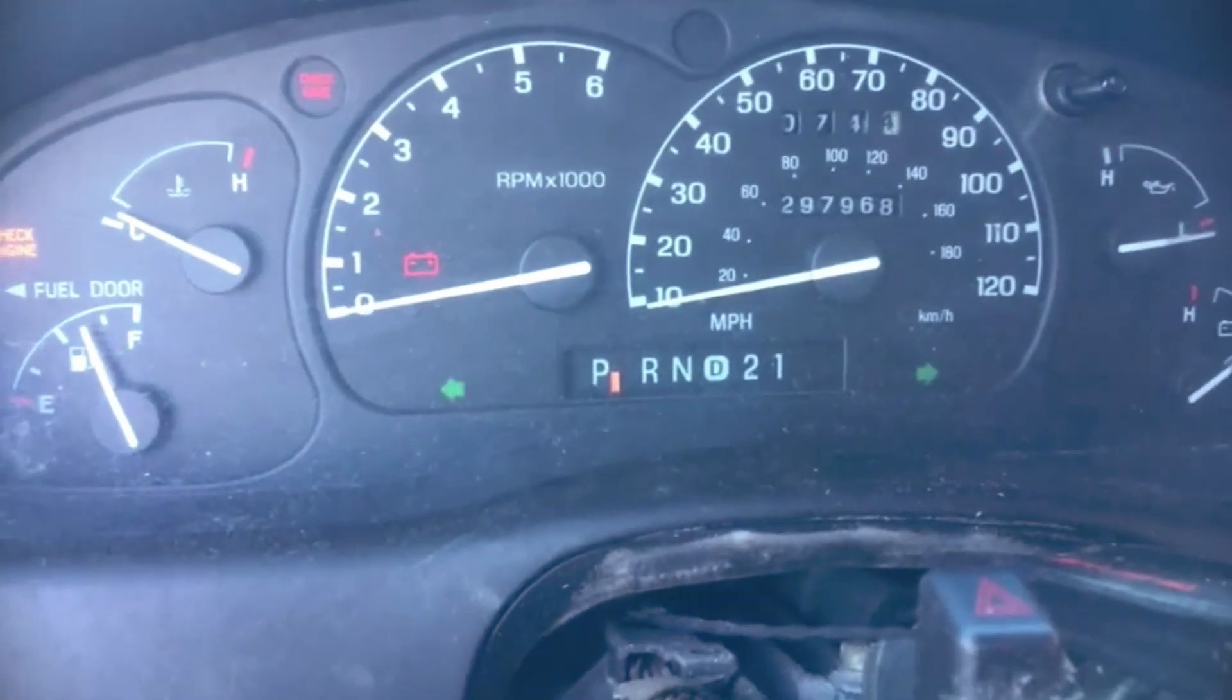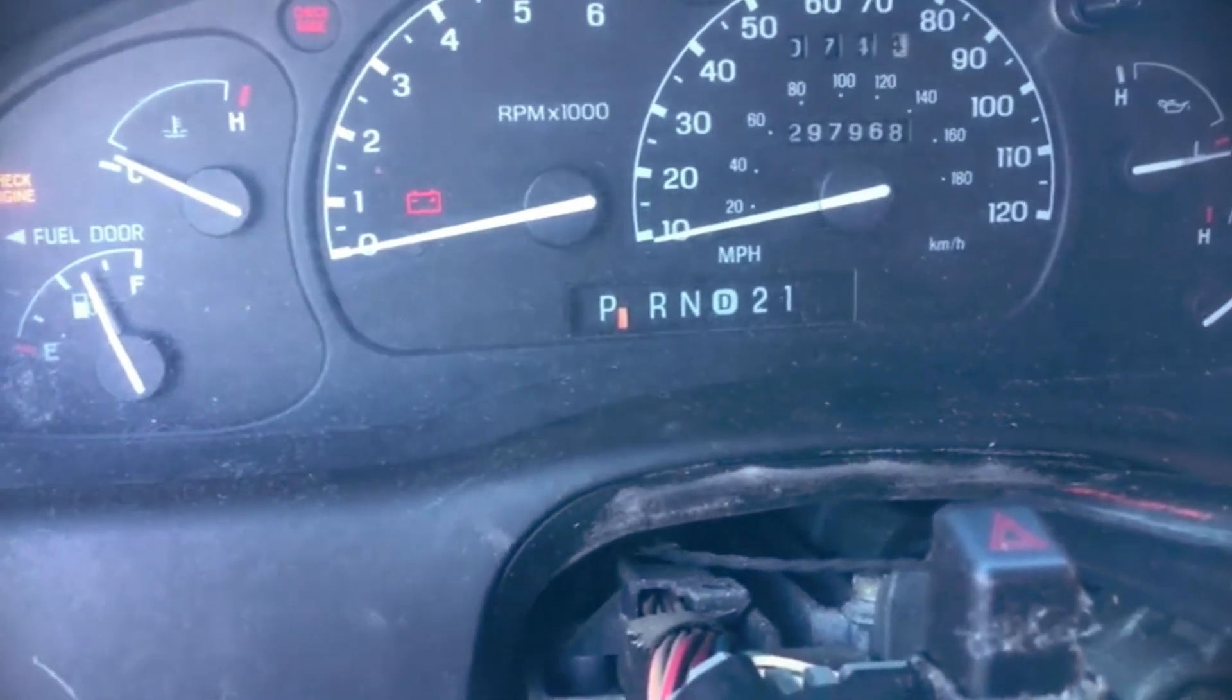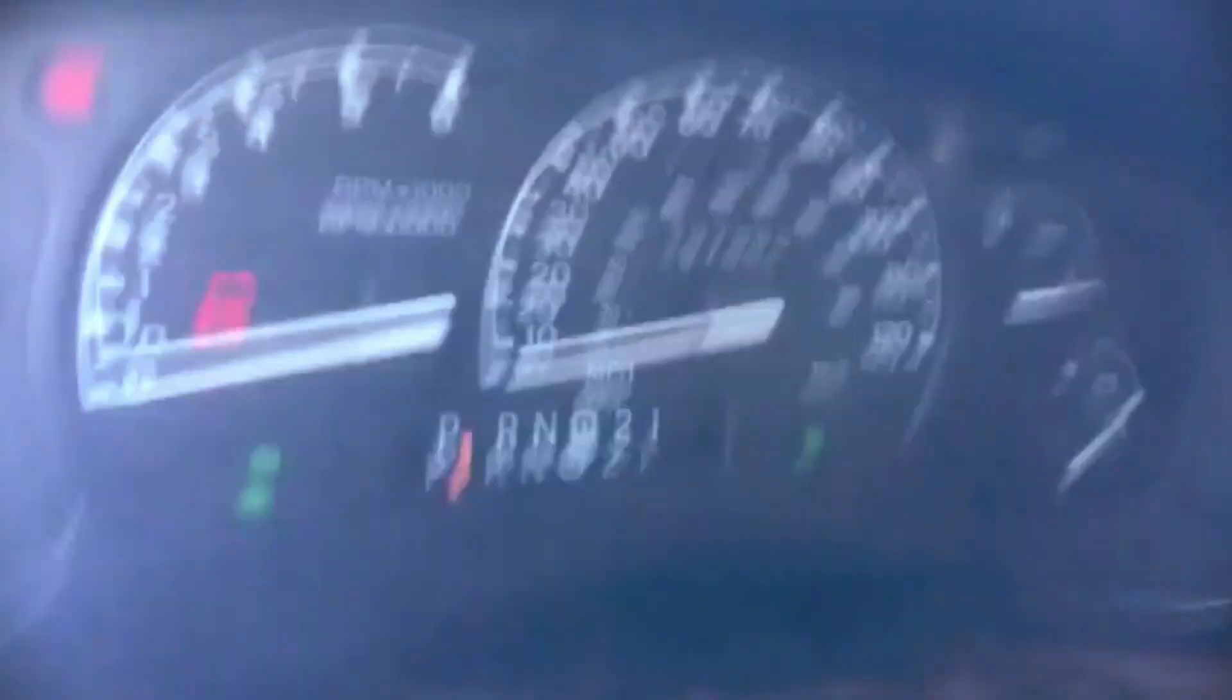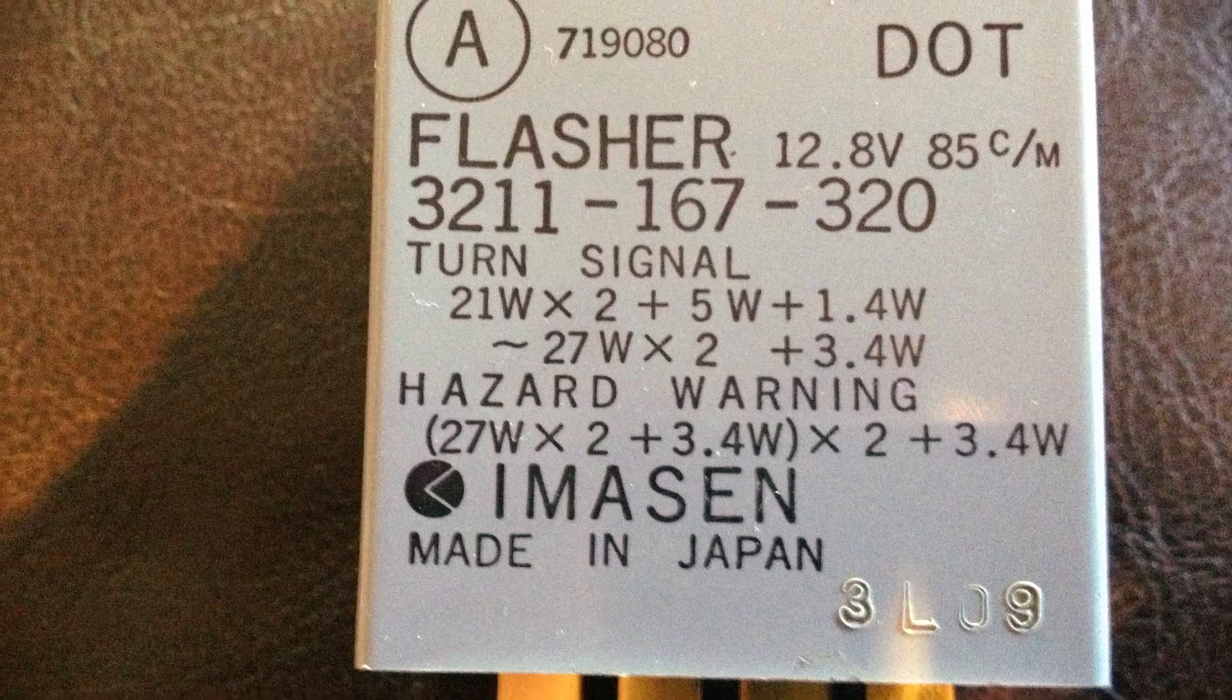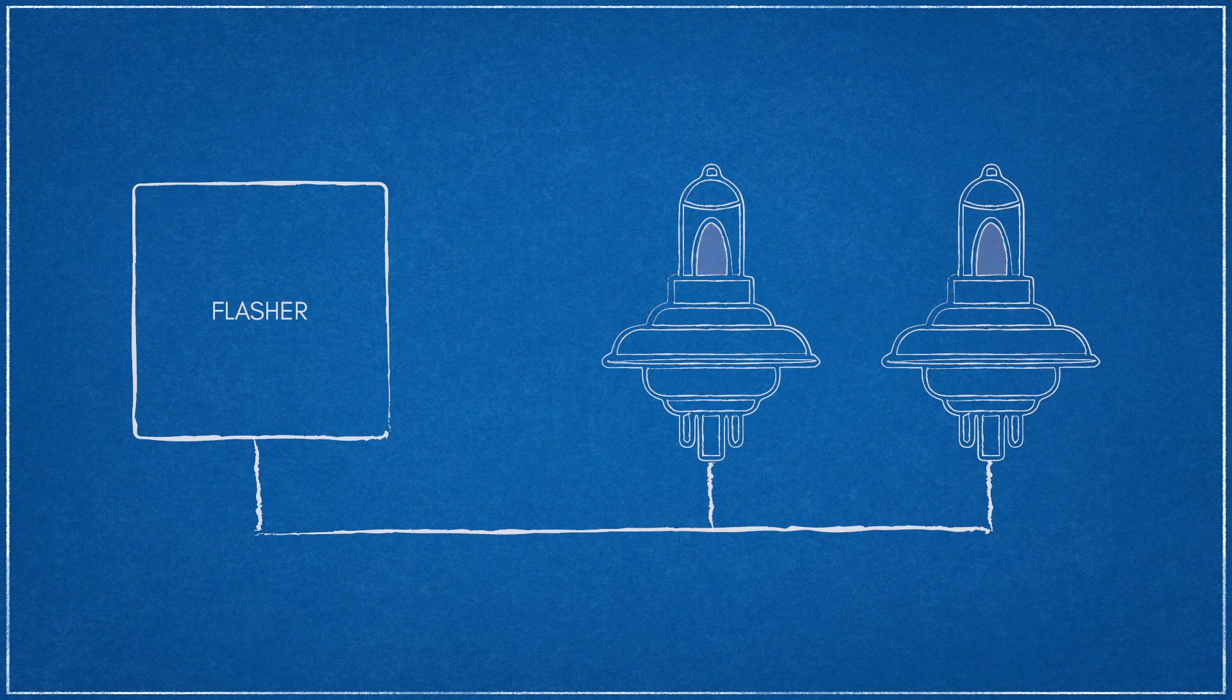On older cars, thermal flashers are the mechanism by which turn signals and hazard signals flash. That clicking sound is directly created by the cycling of the flasher's thermal switch. By balancing the current draw between the heating element in the flasher and the current draw of the light bulbs being flashed in the circuit, the ability to detect a bulb's operation becomes possible.